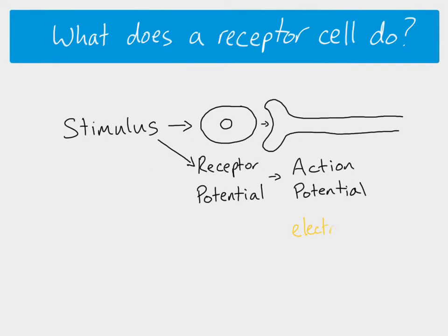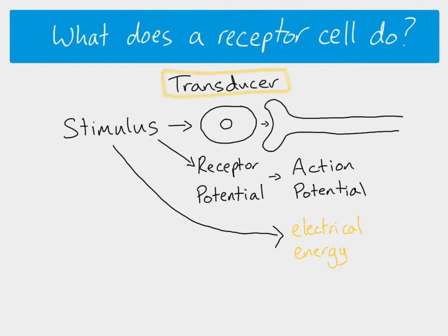An action potential is a form of electrical energy. The stimulus is another kind of energy - it could be light energy, heat energy, or chemical energy. So the stimulus is taking one form of energy and converting it into electrical energy. Something that converts energy from one form to another is called a transducer, so we can say that a receptor cell is a transducer.